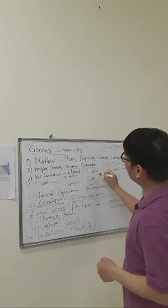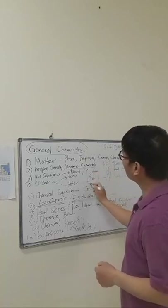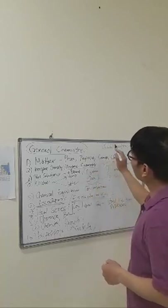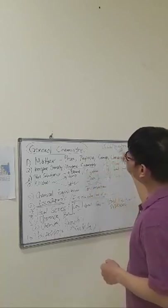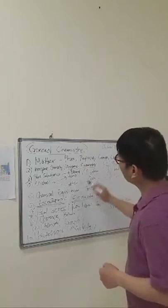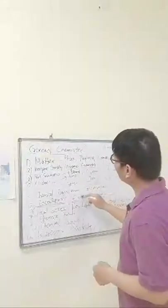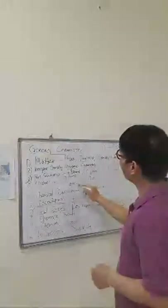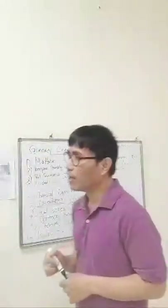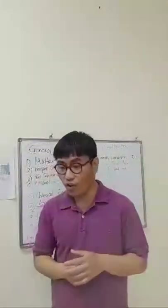A lot of sciences fall under chemistry's umbrella — physics, geology, metallurgy, environment, earth science, and even astronomy: the study of interaction of heavenly bodies in outer space, such as the solar system, the sun, the moon, asteroids, comets, galaxies, and the Milky Way.